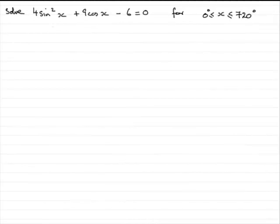Hi, now in the last part of this question it says hence solve 4 sine squared x plus 9 cos x minus 6 equals 0 for x greater than or equal to 0 degrees but less than or equal to 720 degrees.